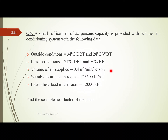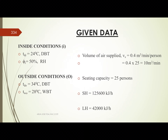The volume of air supplied is 0.4 cubic meters per minute per person. So, 0.4 multiplied by 25 equals 10 cubic meters per minute. The seating capacity is 25 persons.